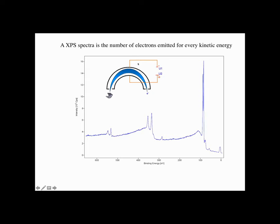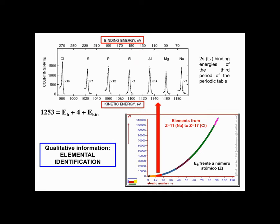If I see a peak in a spectrum and look at the kinetic and binding energy, I can identify which element emitted that electron. Here are elements from sodium to chlorine — the binding energy of the 1s peak changes for each one. By measuring the binding energy, I know which element the electron came from. Elementary identification is very easy, accurate, and works for every atomic level in the material.